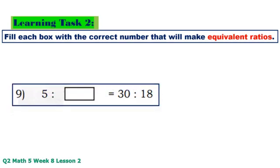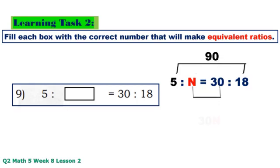Number 9: 5 times 18 equals 90, N times 30 equals 30N. 90 divided by 30 equals 3.